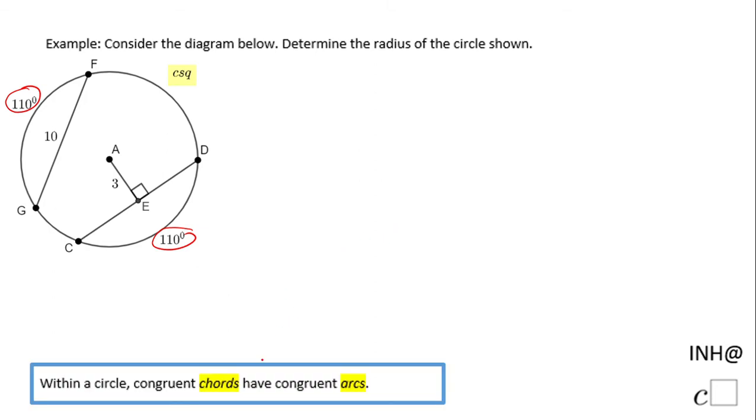Within a circle, congruent chords have congruent arcs. But if you take a look, this is kind of backwards. We have congruent arcs, so do we have congruent chords? The answer is yes. The converse of this theorem is also true.